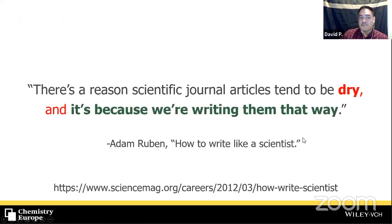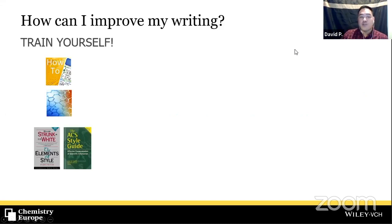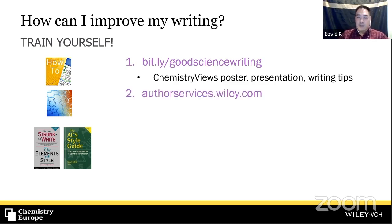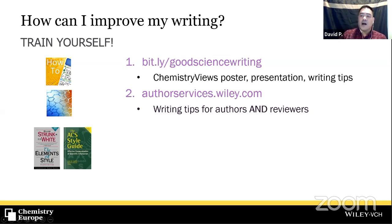Know what's good about your work and state it. There's a reason scientific journal articles tend to be dry — it's because we write them that way, and we can change that. How can you improve your writing? Check out bit.ly/goodsciencewriting — the Chemistry Views poster presentation and writing tips. You'll find lots of exercises, articles to read, and things to download. Also visit Wiley Author Services online for lots of information for authors and reviewers on peer review, open access, and many other publishing topics.